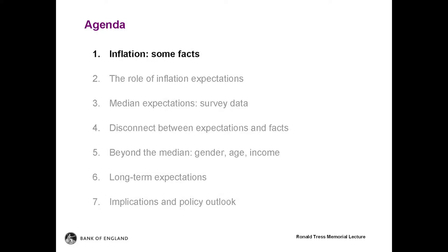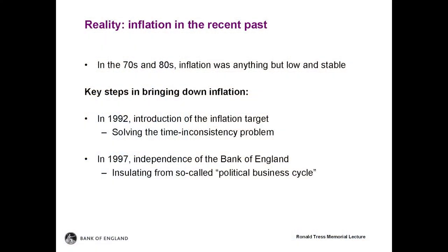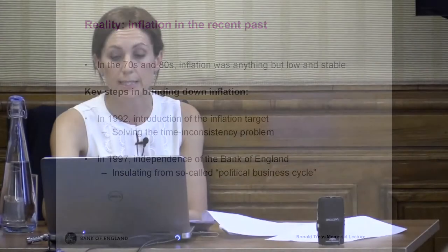Let me start with the facts about inflation. Since the Bank of England's independence in 1997, the Monetary Policy Committee has been tasked with achieving price stability as defined by the government's inflation target. The formation of the MPC was a further step in the evolution of the UK monetary policy framework following the adoption of an explicit inflation target in 1992. Since 2004, the target has been set as an inflation rate of 2% measured by the 12-month increase in the consumer price index.